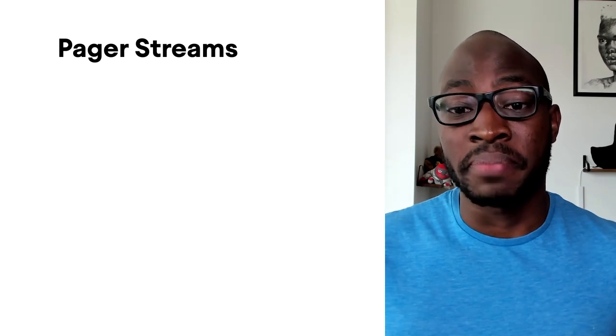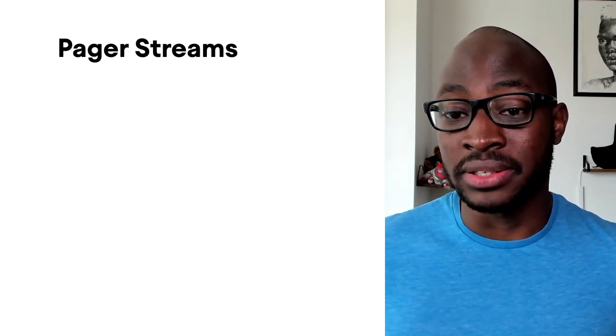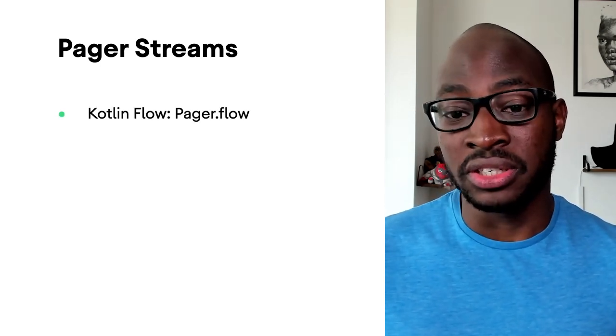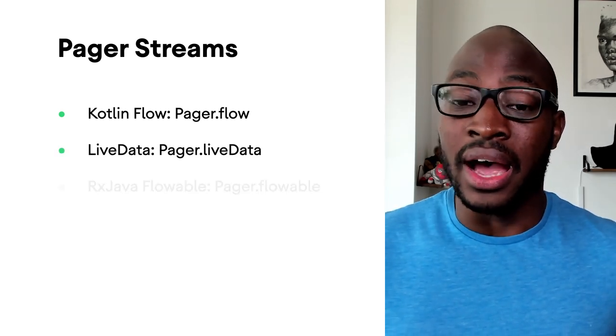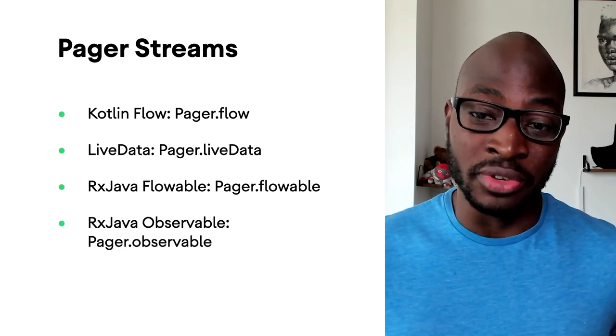With the pager constructed, we can now get data from it. The type produced from the pager is PagingData. The paging library offers multiple ways of consuming paging data as a stream, including Kotlin Flow via pager.flow, LiveData via pager.liveData, RxJava Flowable via pager.flowable, and RxJava Observable via pager.observable. Each emission of PagingData is a distinct window into its backing PagingSource. As a user scrolls through the list, the PagingData will keep fetching from the PagingSource to provide content. Should the PagingSource be invalidated, a new PagingData will be emitted to keep items in sync with what is displayed in the UI. Think of PagingData as a stream of events from the PagingSource at a given instance in time, which the business layer can then transform before presenting it to the UI.